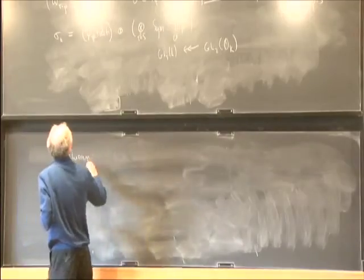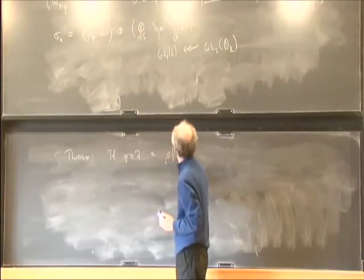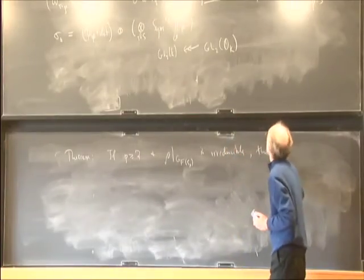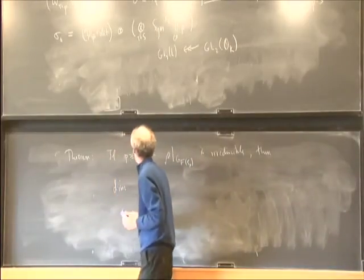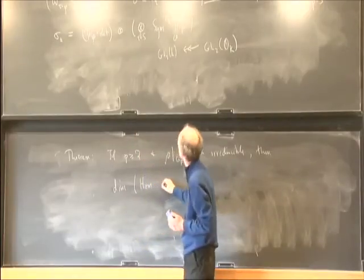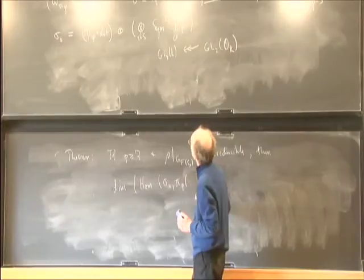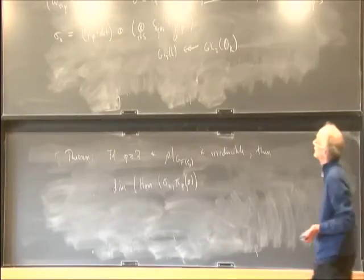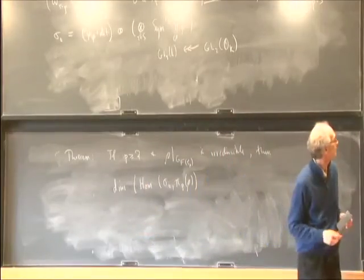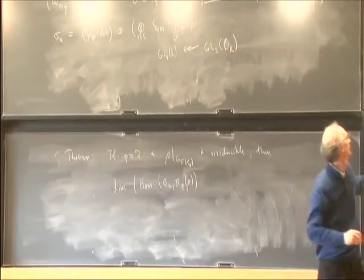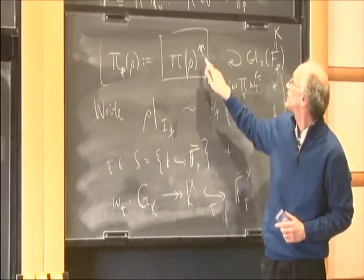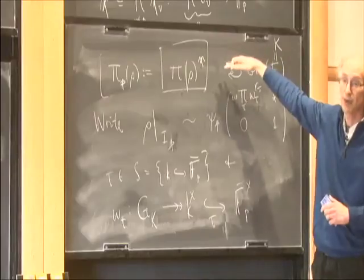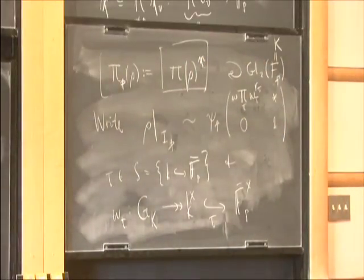In this case, one knows: if p is at least 7 and the restriction to F(zeta_p) is irreducible, then the dimension of the space of homomorphisms from sigma_0 into pi_p — pi_p of rho, which was defined here — equals 1. So this is the definition, the ad hoc definition of the local factor: the chi-eigenspace. So this was done just to get multiplicity 1, which is the statement I'm now making.